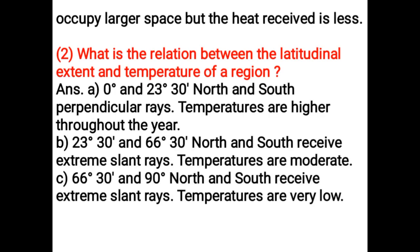Between 0 degree and 23 degree 30 minutes north and south, perpendicular rays are received and temperatures are higher throughout the year. Between 23 degree 30 minutes and 66 degree 30 minutes north and south, extreme slant rays are received and temperatures are moderate. Between 66 degree 30 minutes and 90 degree north and south, extreme slant rays are received and temperatures are very low.